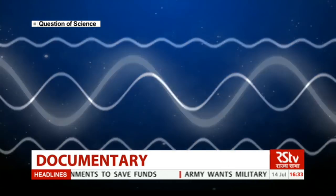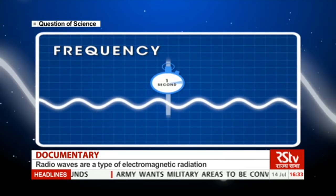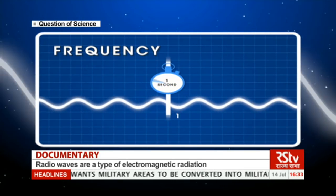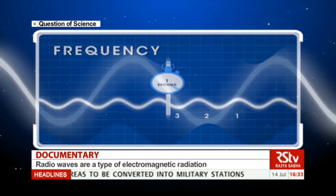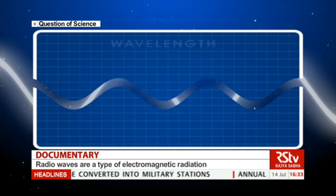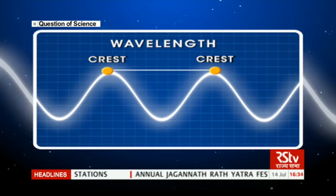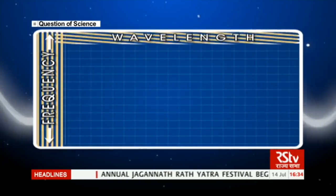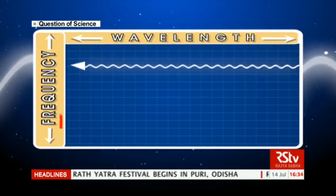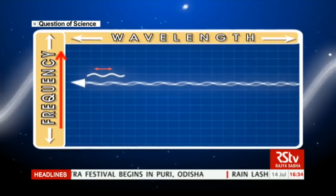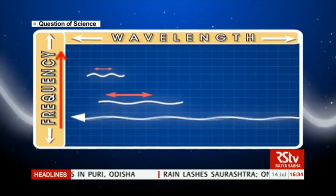Waves are also described by wavelengths, or the shortest distance between their crests. The higher the frequency, the shorter the wavelength. The longer the wavelength, the smaller the frequency.